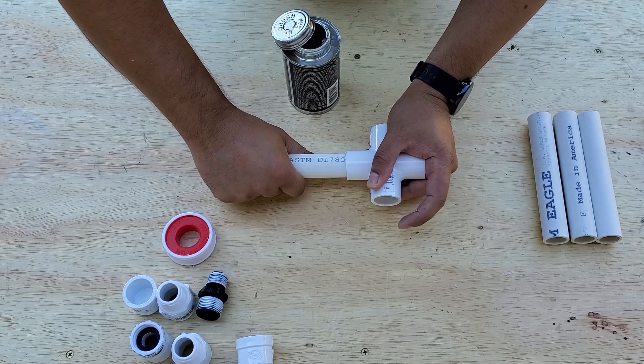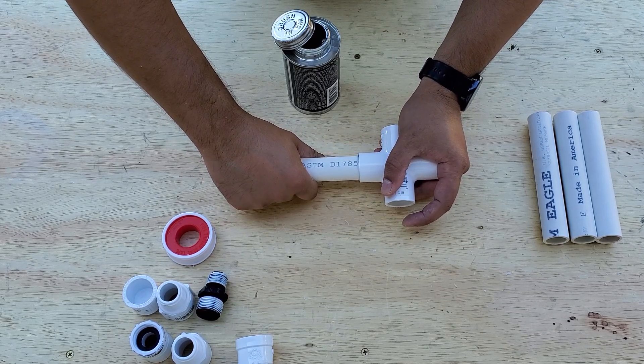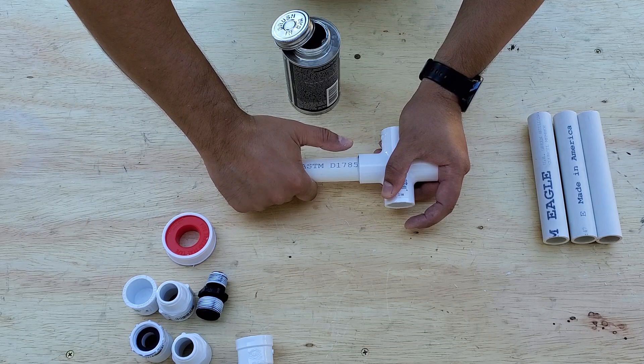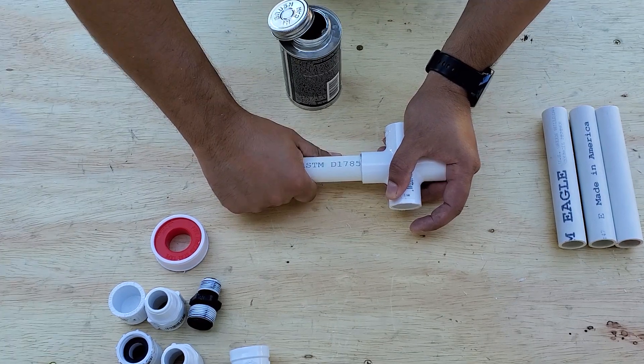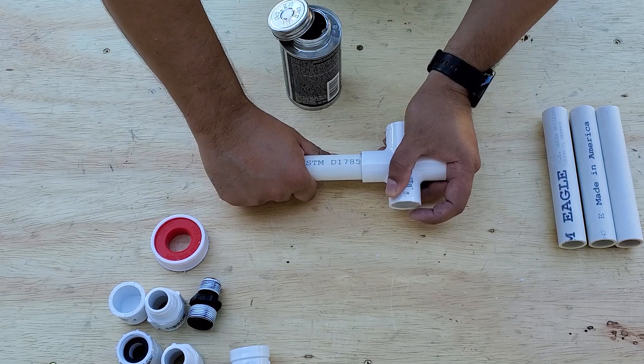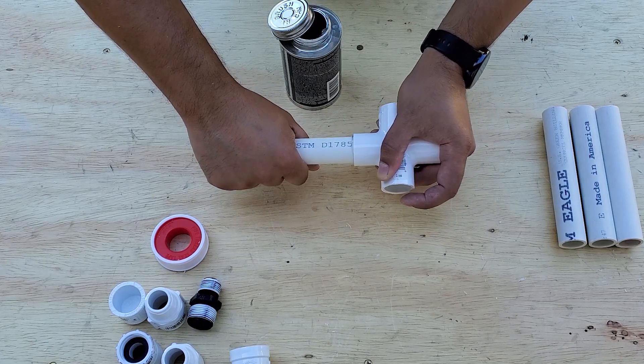And one thing that may happen to you is once you put the glue and you stick it in how I am doing it now, if you let go too soon this part will actually start popping out. So do hold it in place for about 15-20 seconds—the can says 30—because it does pop out and it's happened to me before.